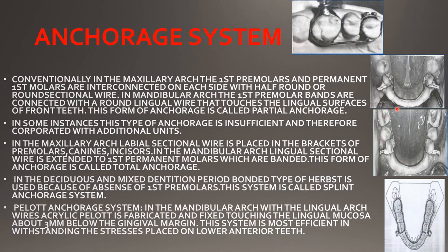In the partial anchorage, the wire connects to the first premolar. When this lingual wire is extended to the first molars, this is known as total anchorage — the anchorage is increased by involving the molars in the lower arch, and in the upper arch the wire is extended to premolar, canine, and incisors.